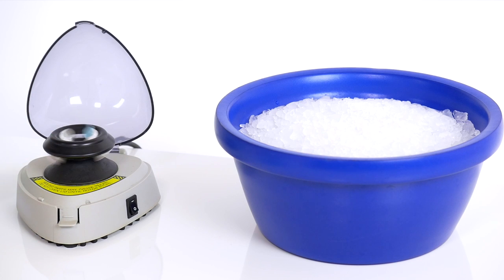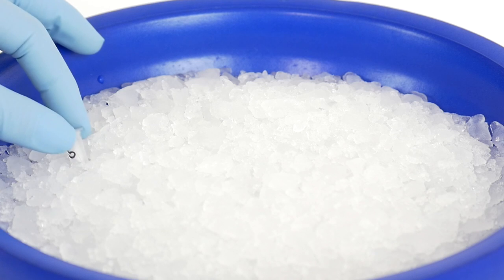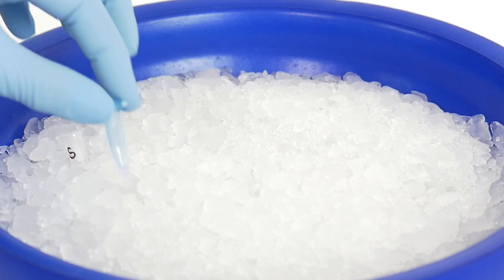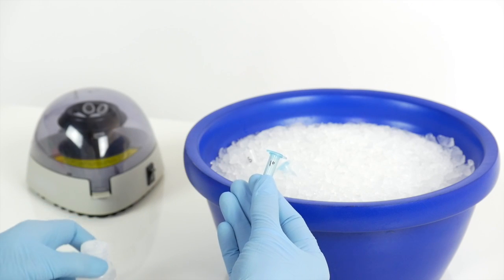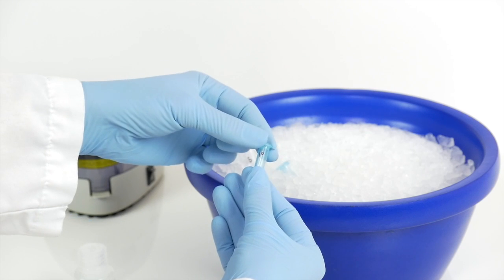Then place them on ice until you're ready to load them onto the plate. By the way, if you're using the system control, you can add 12.5 microliters of the system control primary antibody to your diluted primary antibody.